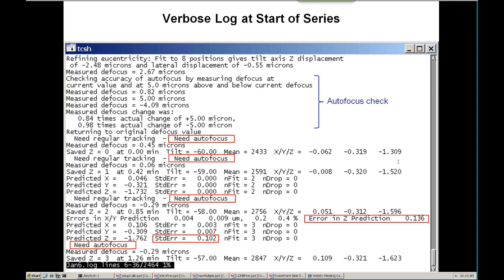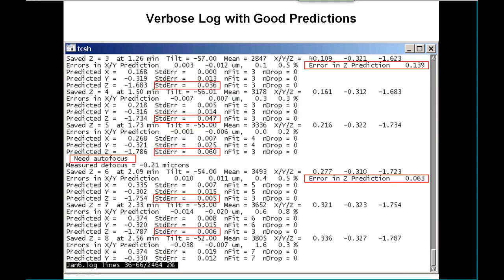The X and Y predictions are good, so it stops tracking, but the standard error is still a little high so it says it still needs to autofocus. We go on to the next tilt and again we have the error in the Z prediction from the autofocus. But this time, when it does the fifth, the standard error is low and it says it can skip focusing, so it goes ahead, skips focusing and tracking, takes another picture, and predicts again.